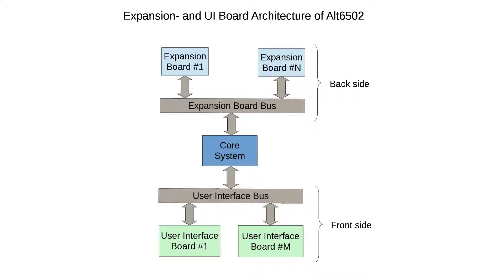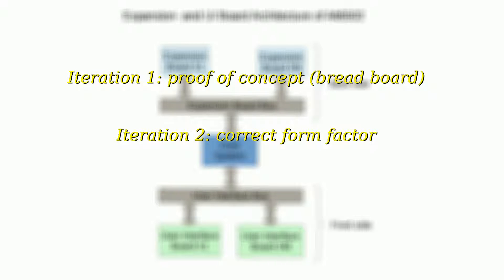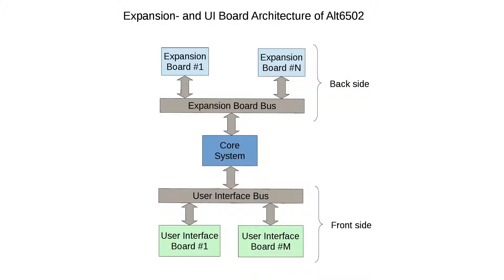The making of this computer will be divided into two iterations. In the first iteration we will construct a slightly reduced version built around a breadboard and some euro boards — it will demonstrate the viability of the proposed design. The second iteration includes proper PCBs, mechanics and a correct form factor. That will be the real thing. First I'll show what the final architecture will look like, and then I'll take a step back and describe the construction in iteration one.